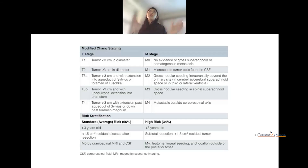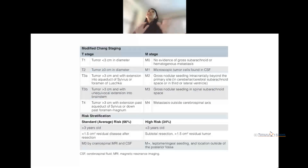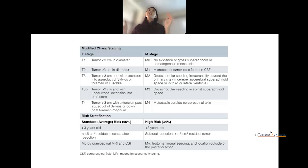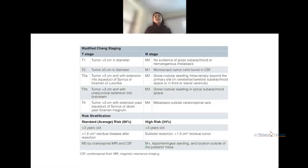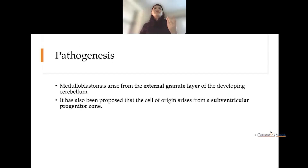For risk stratification: standard risk (approximately 66%) requires the child to be more than 3 years of age, residual tumor after resection less than 1.5 cm², and M0 on cranial MRI and CSF. In the high risk group, the child is usually less than 3 years of age, residual tumor is more than 1.5 cm², and there is leptomeningeal seeding or location outside the posterior fossa.